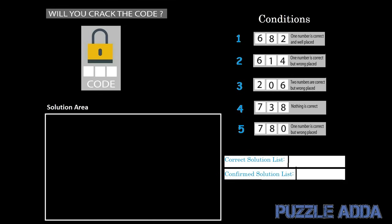Now let me solve the puzzle. This is the development environment set up to crack the three-digit numeric lock. On the right side we have all five conditions given to us. Below that we have two lists: the correct solution list and the confirmed solution list. The correct solution list contains digits which can possibly be the correct code, while the confirmed solution list contains digits confirmed to be correct. On the left-hand side we have the solution area where we will solve the puzzle.